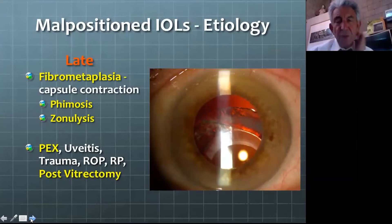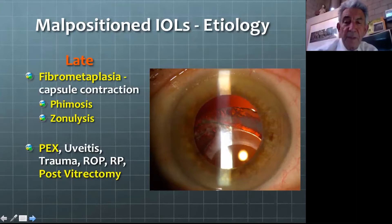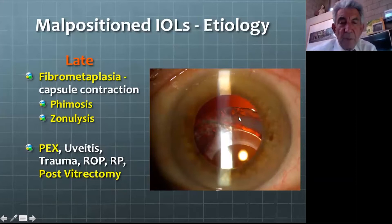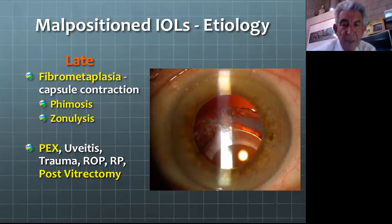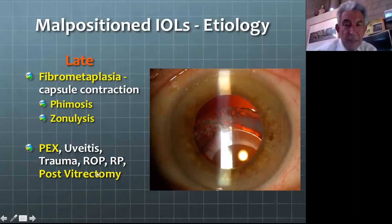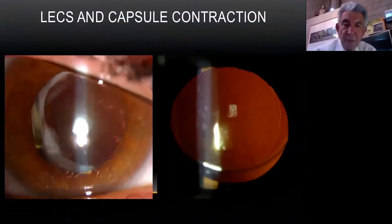Late malposition is mostly due to fibrometaplasia of the anterior subcapsular lens epithelial cells. As you can see, fibrous tissue surrounds this malpositioned lens in a patient with pseudoexfoliation. That fibrometaplasia causes fibrosis, leads to phimosis, and we think that leads to zonulysis. The most common condition is pseudoexfoliation, followed by uveitis, trauma, retinopathy of prematurity, retinitis pigmentosa, and — increasingly — post-vitrectomy eyes. All of these conditions tend to have a chronic breakdown of the blood-aqueous barrier.